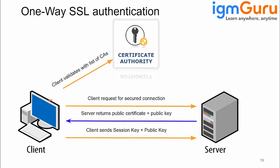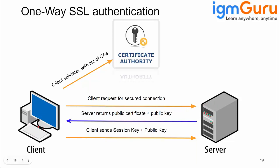If the CA responds saying the certificate is not in the default trust store, then this connection is not going to happen. Once the client gets a valid response from the CA, the client creates a session key. Now it is confirmed it is going to connect to the right person and the right site. That session key is then encrypted by the public key of the server.